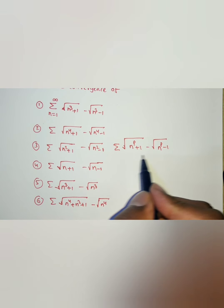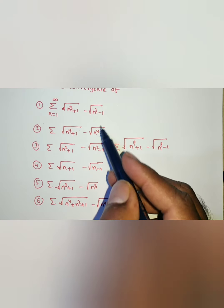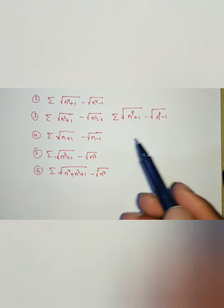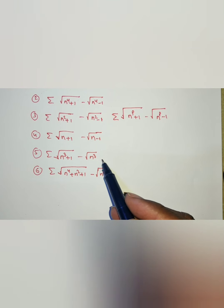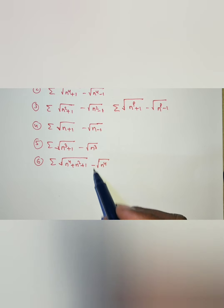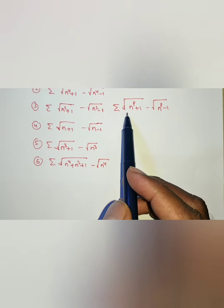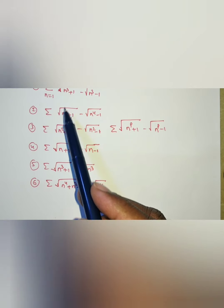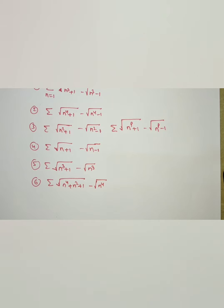Now I will solve this problem. Based on this, we can check whether the series is convergent or divergent. Similarly, you see here n to the power of 3 — you just don't have minus 1. n to the power of 4, you don't have minus 1 or plus 1. These are also similar. If we solve this one, based on this, we can check whether 1, 2, 3, 4, 5, 6 are convergent or divergent together.